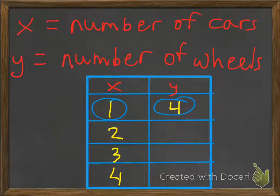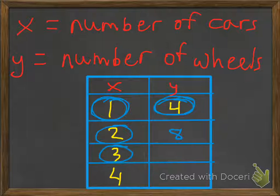Well, let's take a look. We'll say X equals the number of cars, and Y would be the number of wheels. So our first one, we already have one car, but it has four wheels. If you have two cars, you're going to have eight wheels. And of course, three cars, you're going to have 12 wheels. And four cars, you'll have 16 wheels.